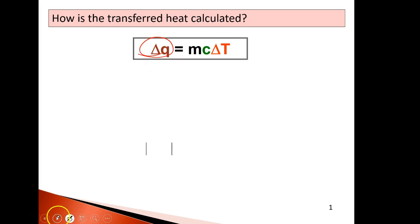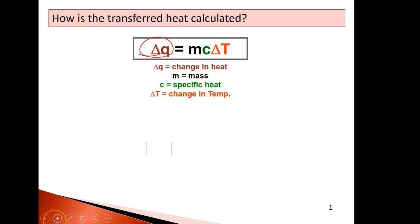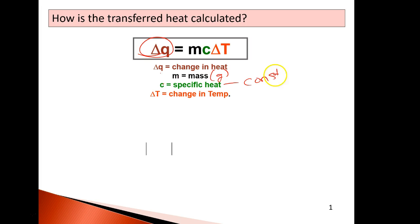This is an equation you're going to see a lot. I'll probably give it to you — Q equals MC delta T. Q is the change in heat. M is the mass, usually in grams. C is the specific heat — that's a constant, I'll give it to you. And delta T is the change in temperature, usually in degrees Celsius.